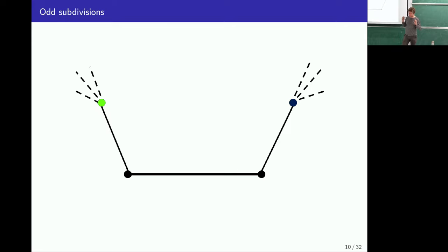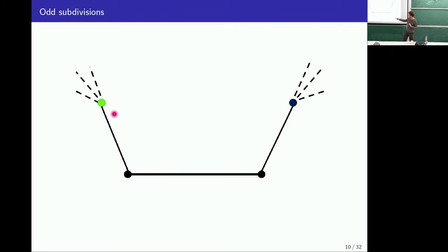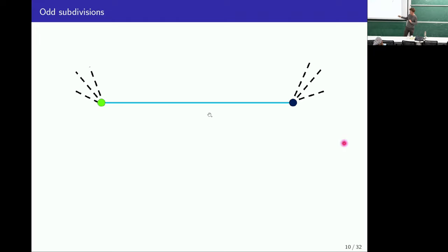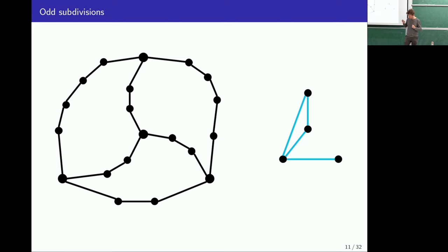One nice thing is that odd subdivisions of graphs are universal for pivot minors. An odd subdivision of a graph is when you replace each edge with paths of odd length. The reason this ends up being universal is because you can shorten these paths by two at a time. If we have two vertices with no additional neighbours other than those on the path, we can pivot on an edge here, which gives us an extra edge, and then delete the two vertices, shortening the path by two.